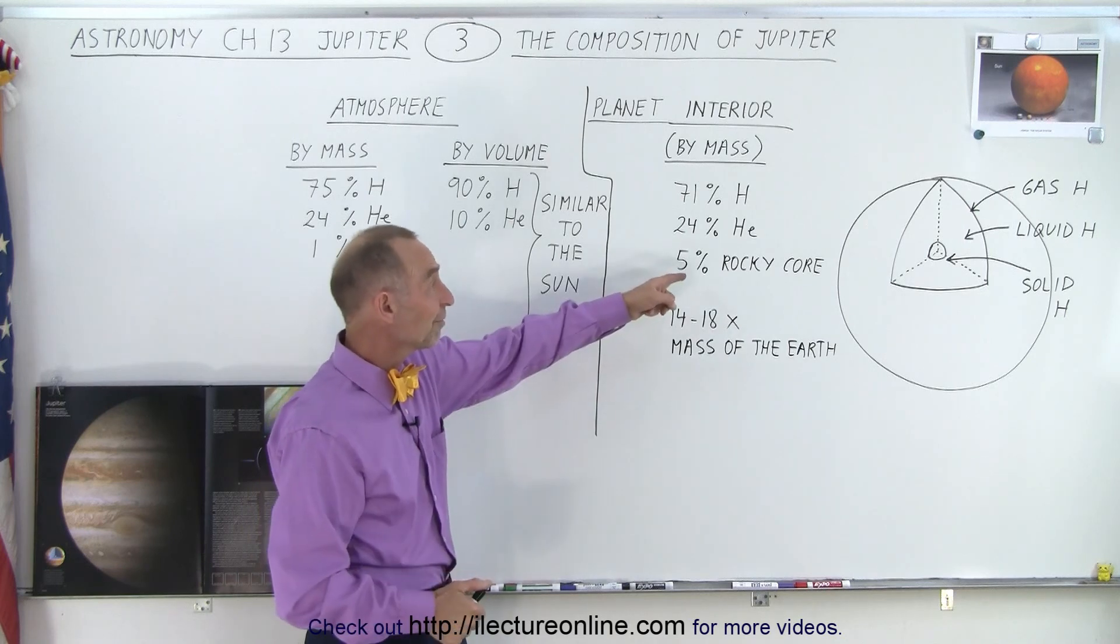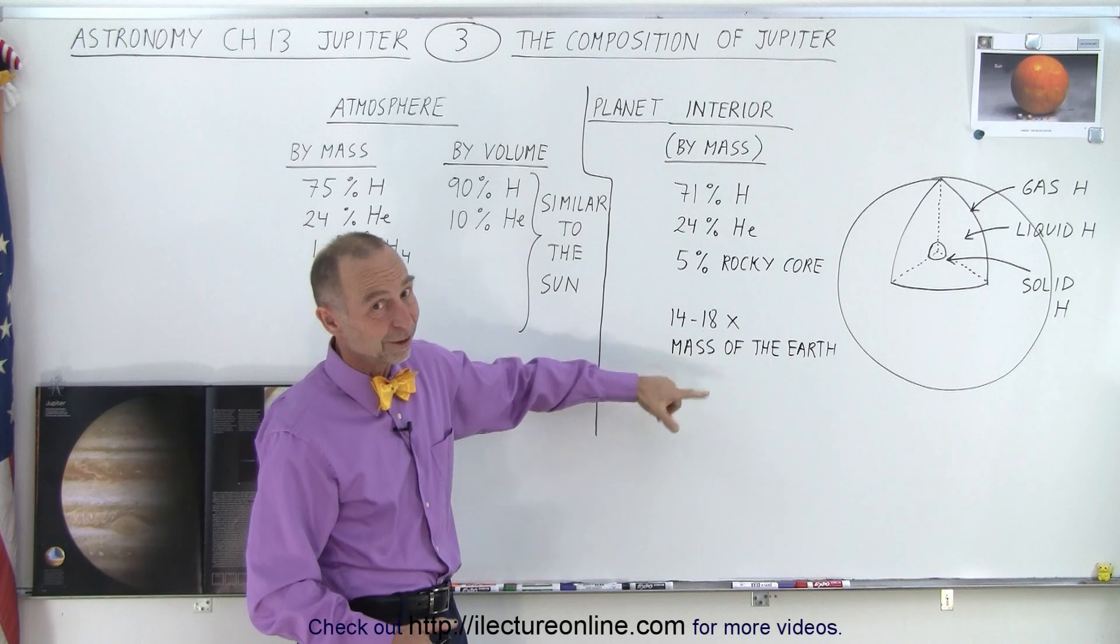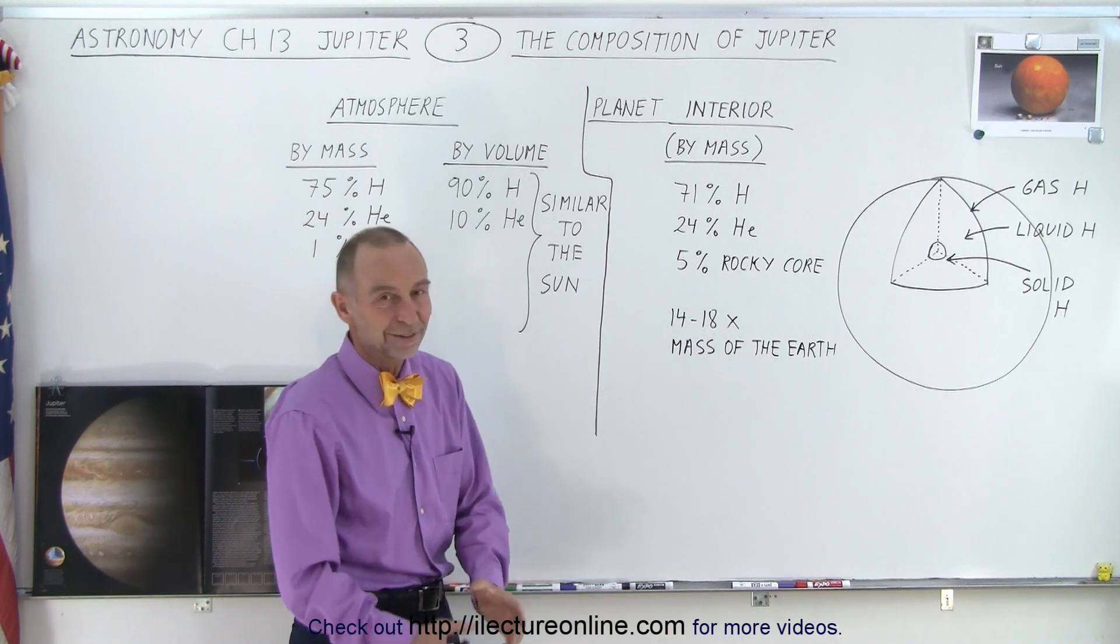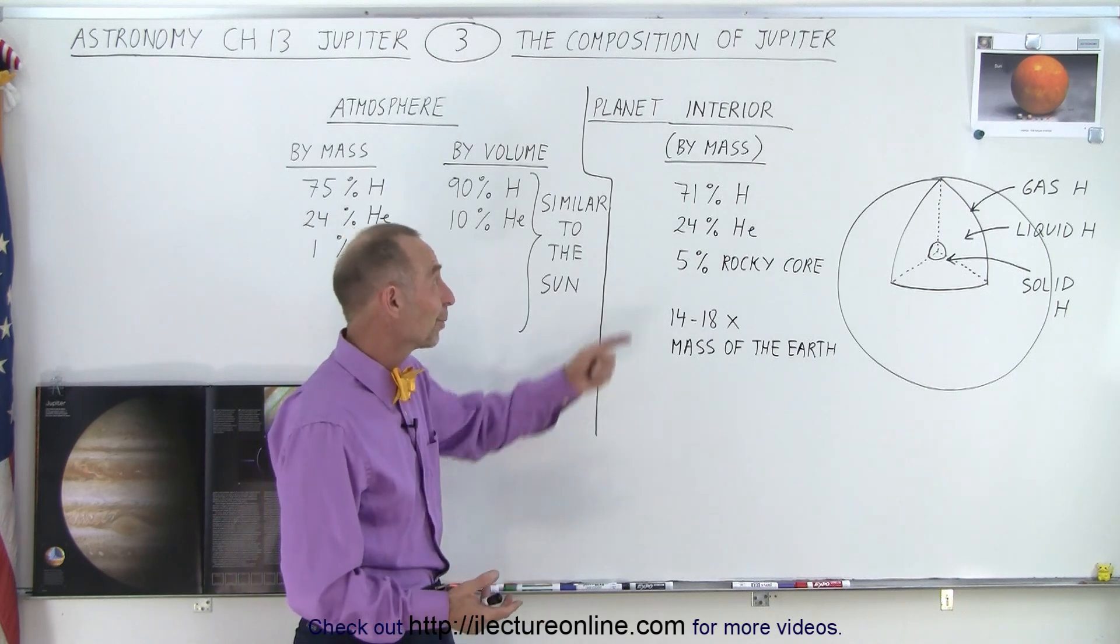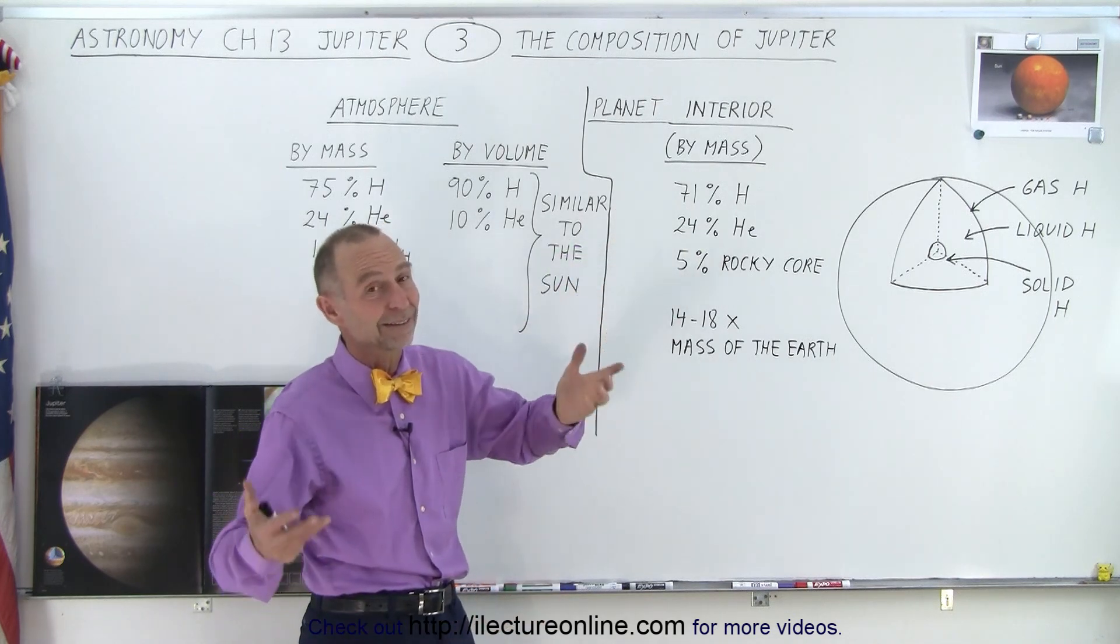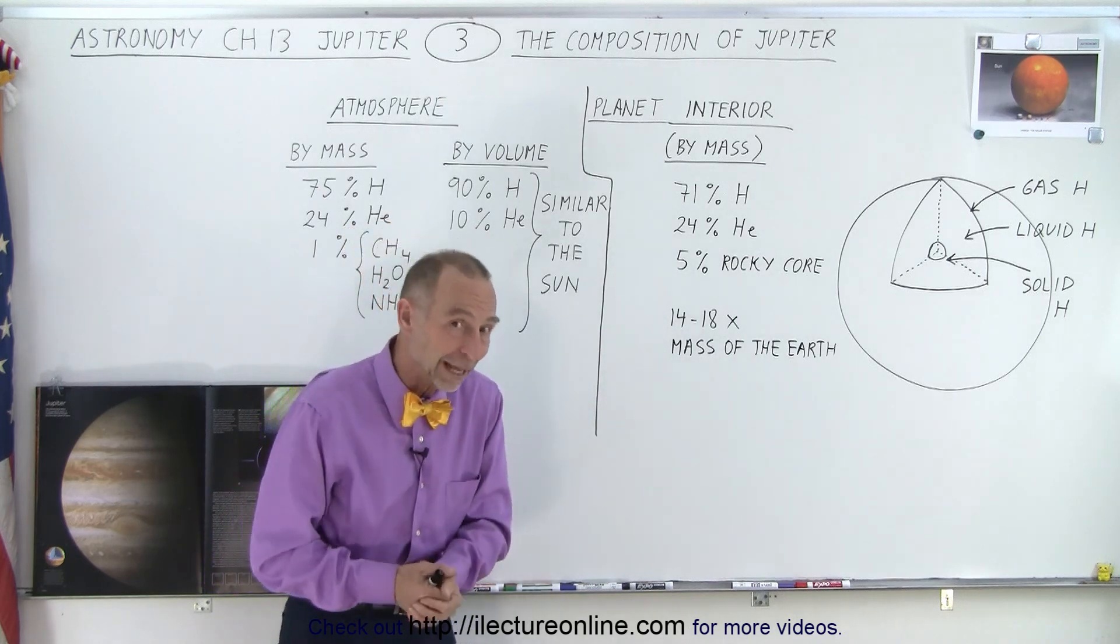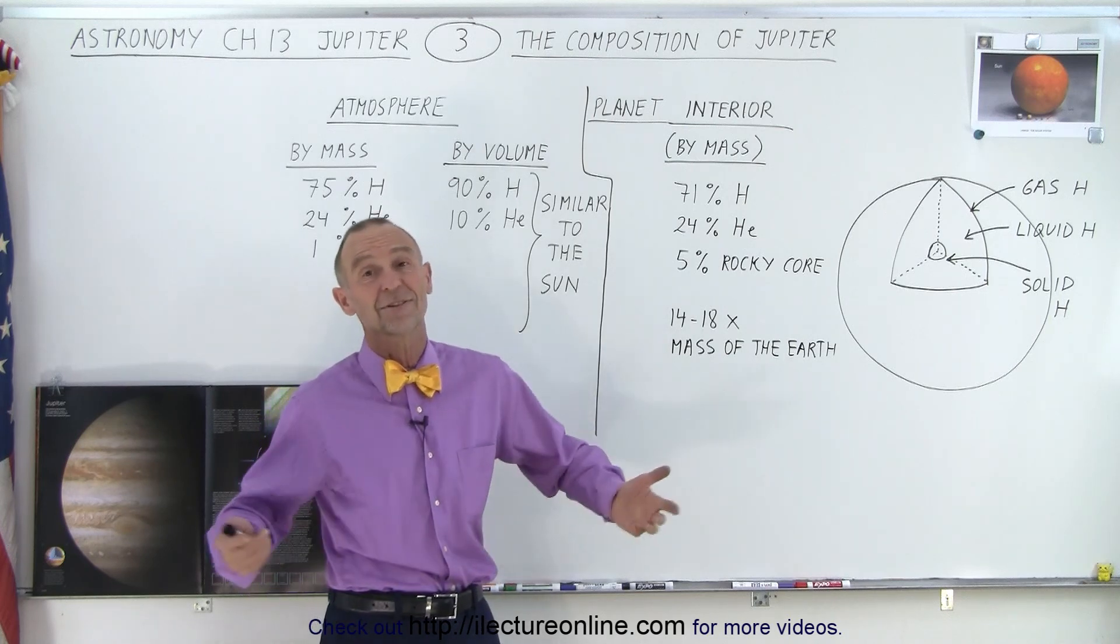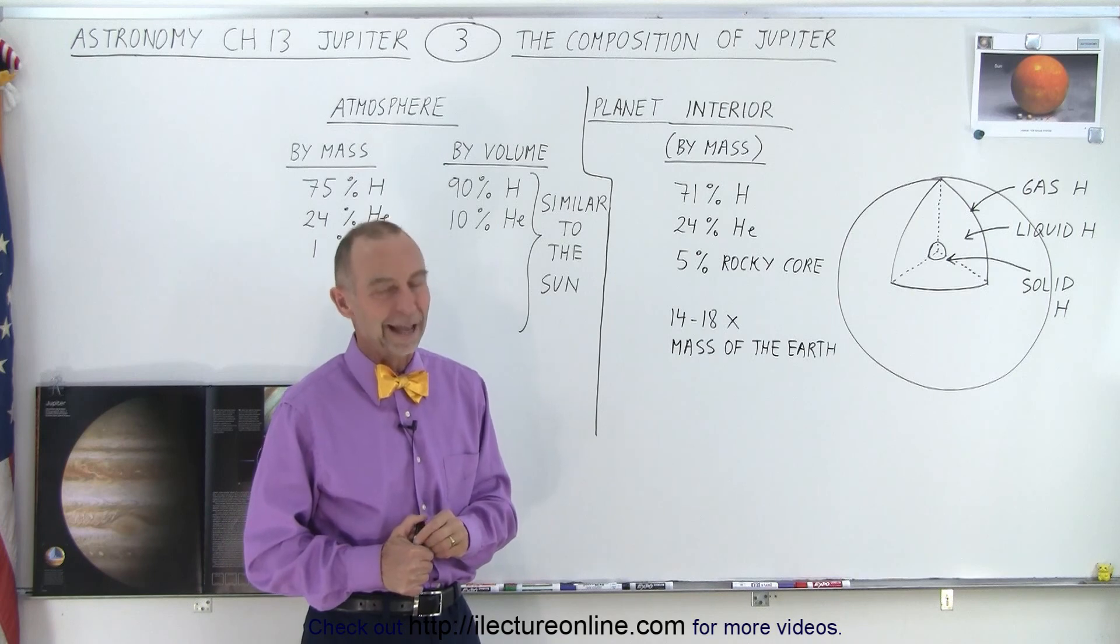But it only makes up 5% of the total mass of the planet when you realize that it's as big as 14 to 18 times the size of the Earth. So it's relatively small compared to the whole rest of the planet. And so we still feel comfortable realizing that 95% of the planet is made out of gas, hydrogen, and helium. We can be pretty confident saying it's a gas planet with a tiny little rocky core at the center.